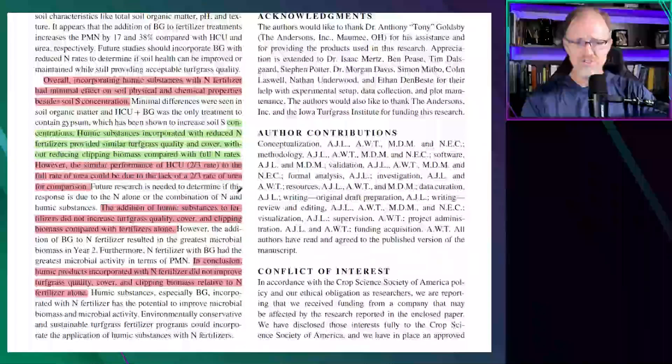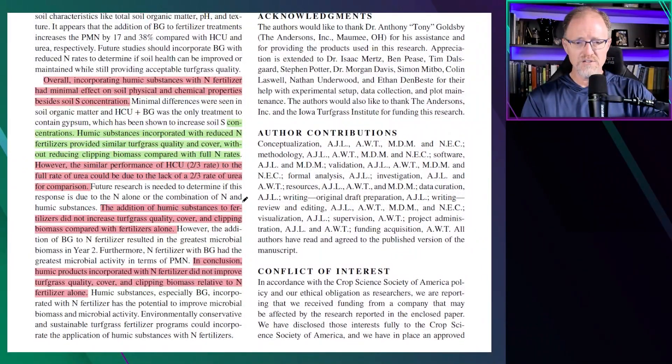We can't say the humic added to a two-thirds rate of nitrogen could actually reduce the amount of nitrogen because there was no two-thirds rate of nitrogen control. The addition of humic substances to fertilizer did not increase turfgrass quality cover or clipping biomass compared to fertilizers alone.